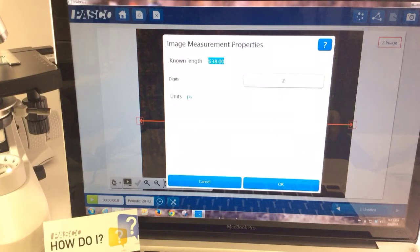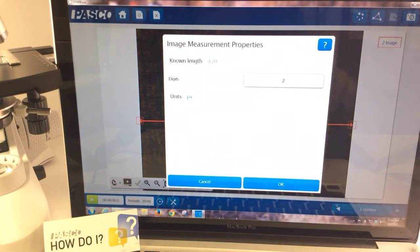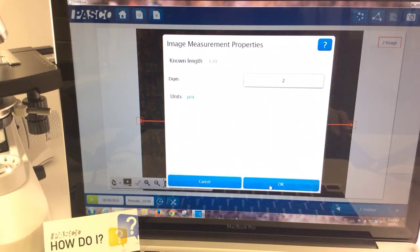So I'm going to change the 638 pixels to now be what I determined from the micrometer slide, which was 170 micrometers. And I can use the symbol button to bring up a keyboard to get micrometers. I can use my regular keyboard for the M and I can click OK.